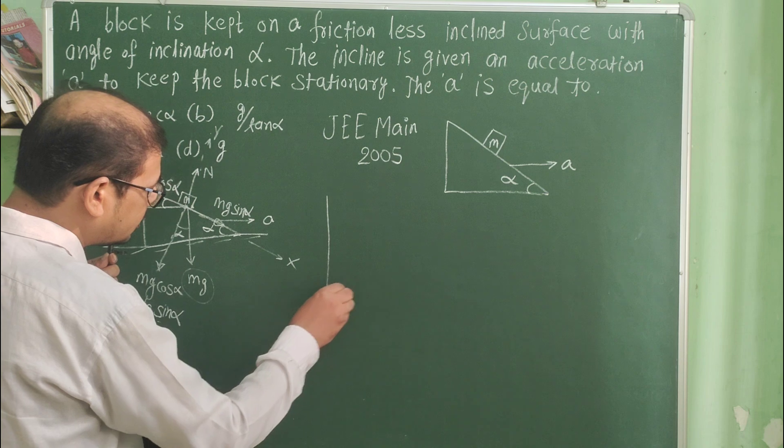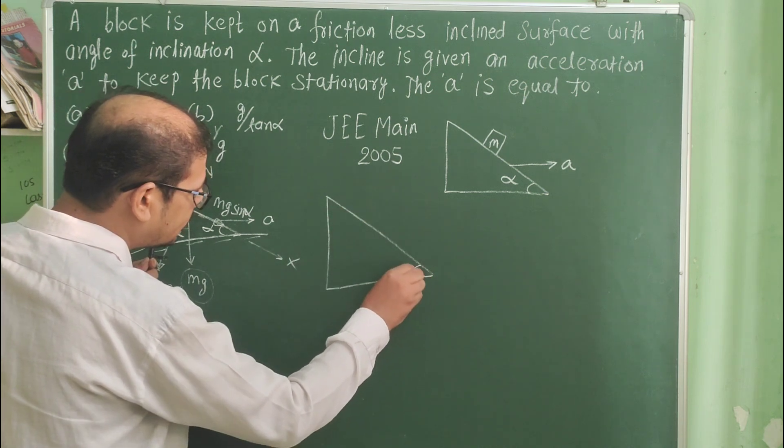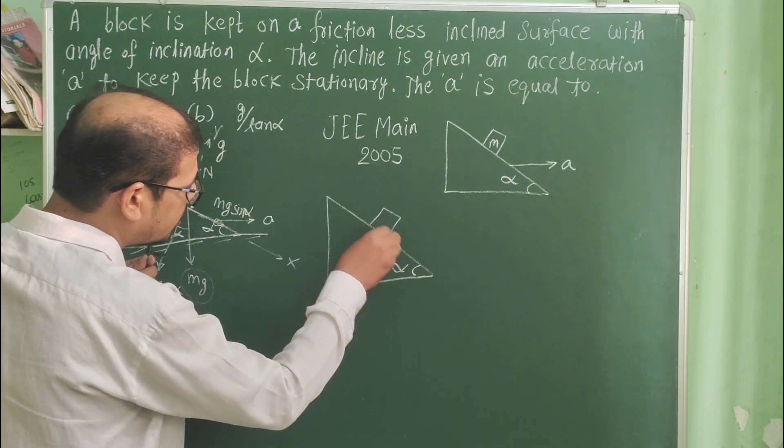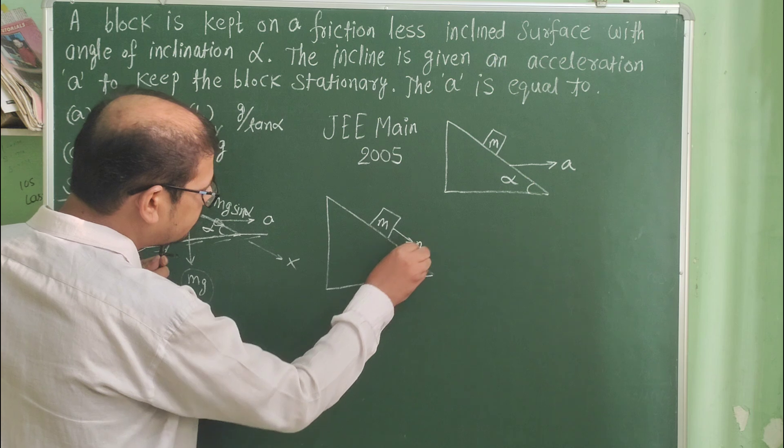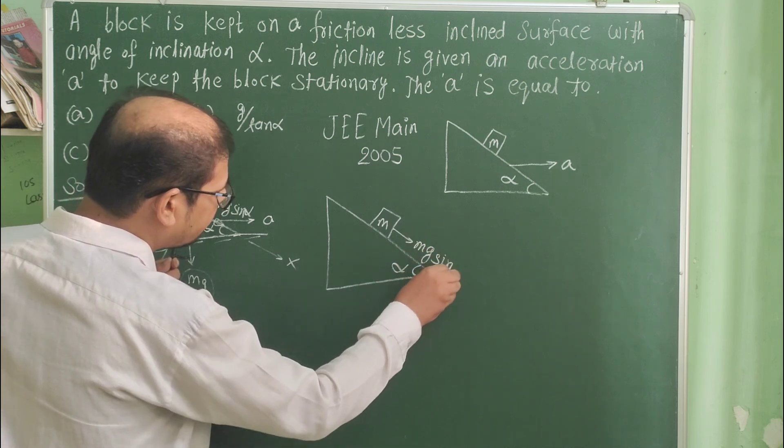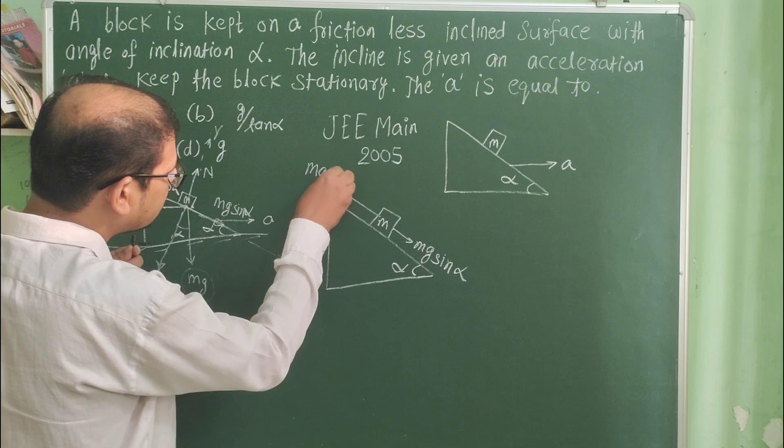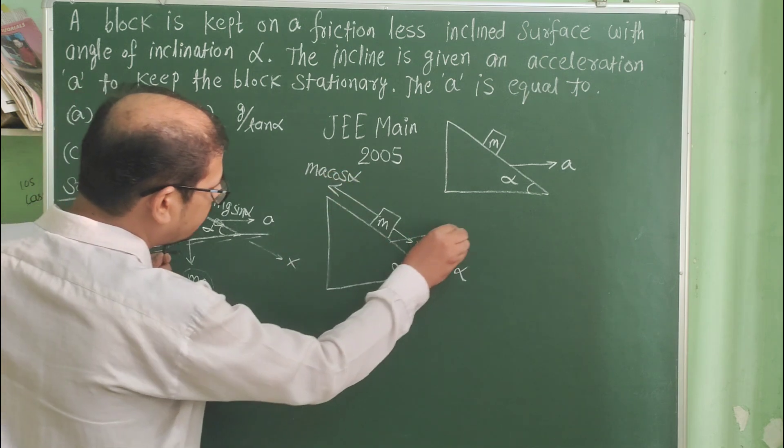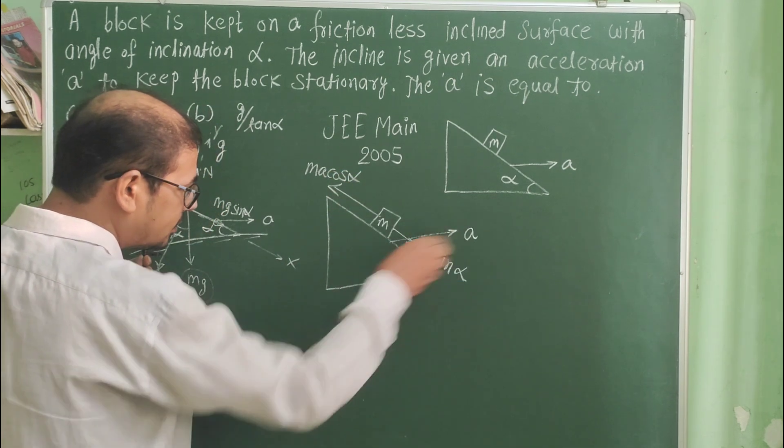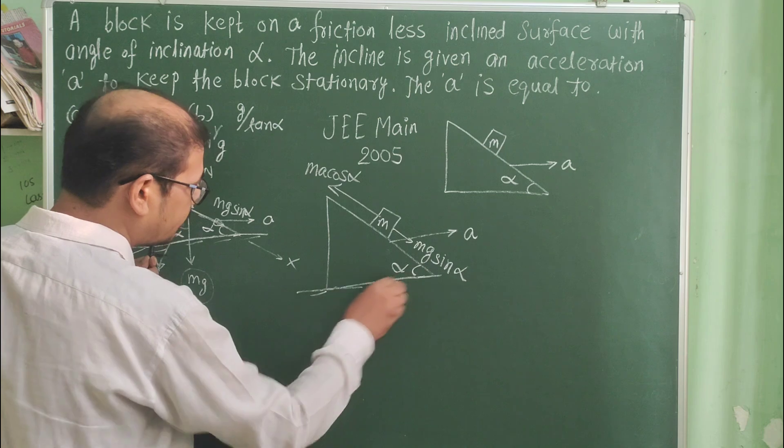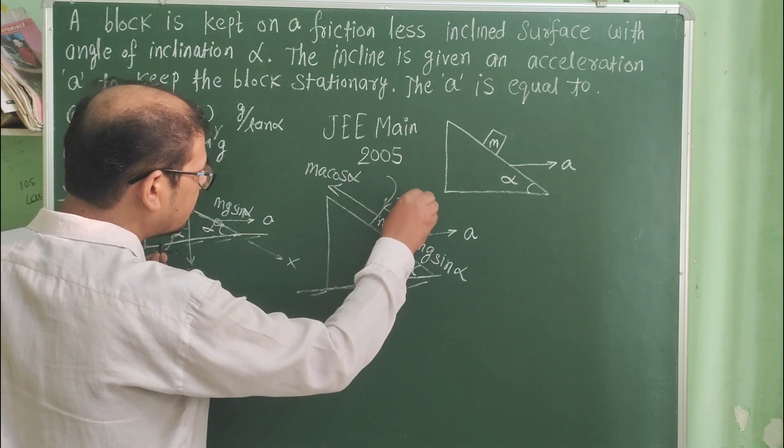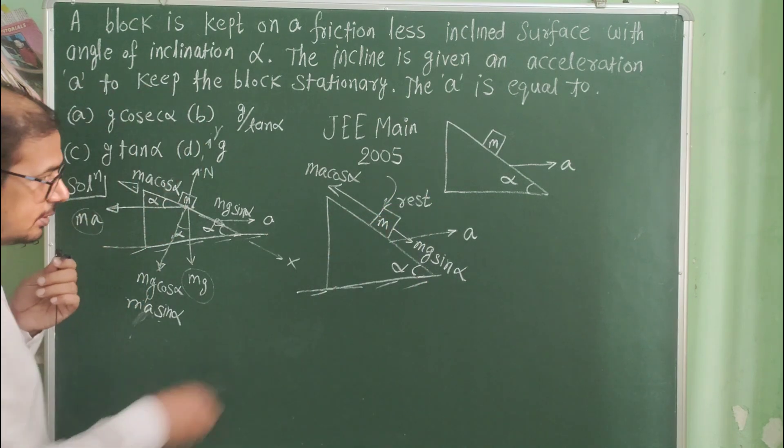So the final result looks like this: this is mg sin alpha and this is ma cos alpha. The inclined plane accelerates towards the right. The block is at rest with respect to the inclined plane.